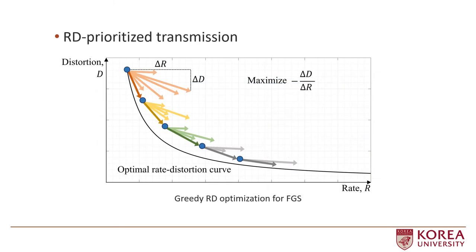To achieve FGS, within each trit plane, we transmit trits after sorting them according to their RD priorities.